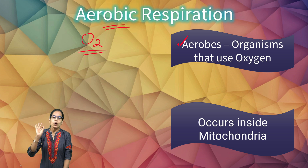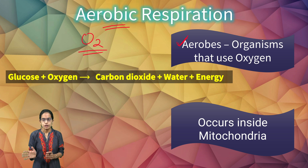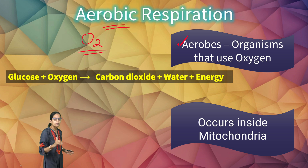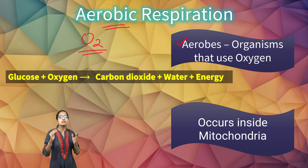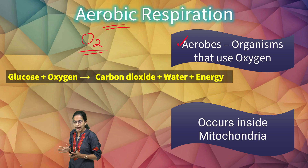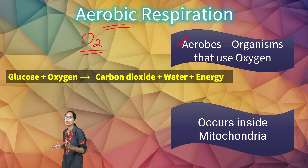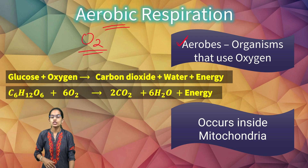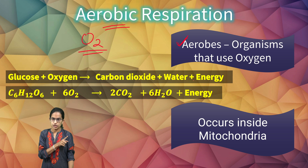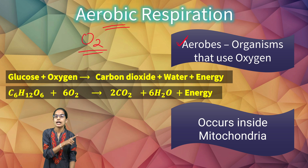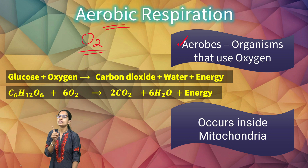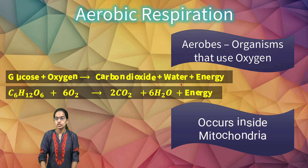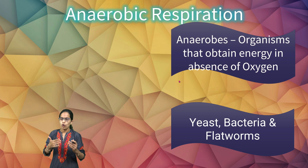What happens in the process of aerobic respiration? In aerobic respiration, glucose and oxygen react to form carbon dioxide, water, and energy. The proportion of energy provided by aerobic respiration is much higher than that provided by anaerobic respiration, which occurs in the absence of oxygen.